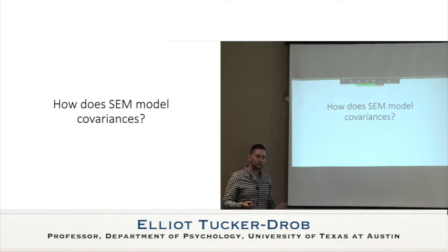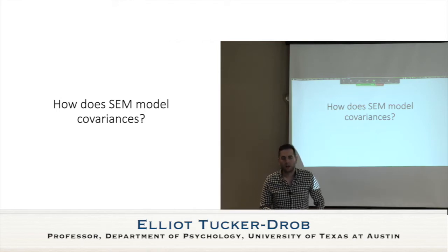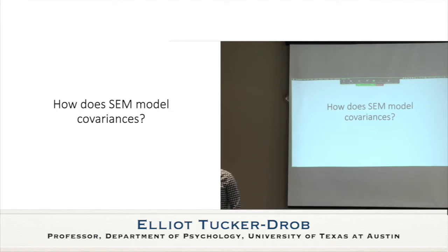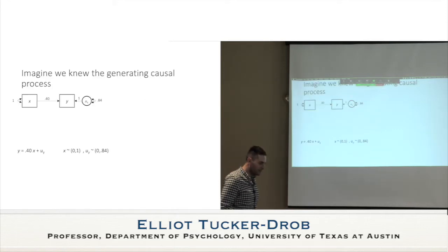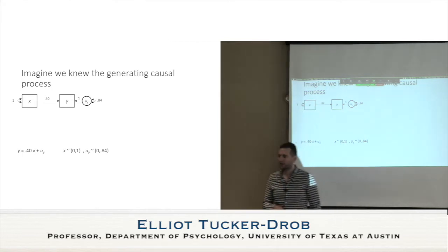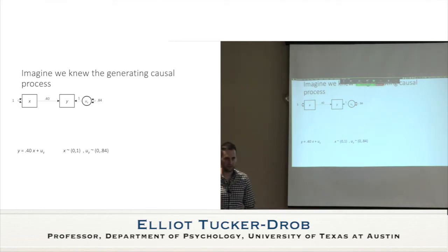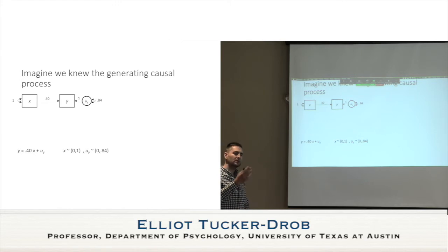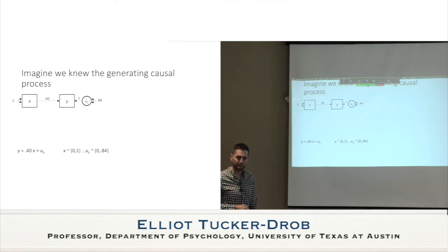Before getting to the genomic part, I want to give some intuition for how structural equation modeling works — how it models covariances. Imagine we actually knew the data-generating model. In reality we don't know the model or the parameters; we have to propose a model, estimate the parameters, and hope the model is correct and the parameters are unbiased. Suppose we knew that X predicts Y with a standardized coefficient of 0.4.